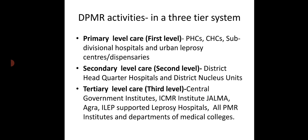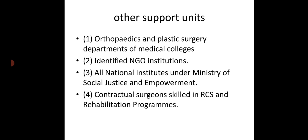DPMR activities are delivered through a 3-tier system. Primary level care includes PHCs, CHCs, subdivisional hospitals, and urban leprosy centers or dispensaries. Secondary level care includes district headquarter hospitals and district nucleus units. Tertiary level care includes central government institutes, ICMR institute JALMA Agra, ILEP-supported leprosy hospitals, all PMR institutes and departments of medical colleges, orthopedics and plastic surgery departments, identified NGO institutions, all national institutes under the Ministry of Social Justice and Empowerment, and contractual surgeons skilled in reconstructive surgery and rehabilitation programs.